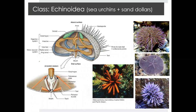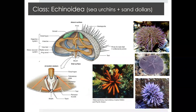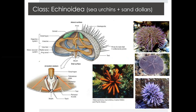The next class is Echinoidea, which are your sea urchins and sand dollars. It's not super important to know the internal structure of sea urchins, but one pretty cool thing is that they have a unique mouthpiece on the bottom called Aristotle's lantern. For your classic sea urchins, you have these balls of what look like pins or needles. And then you also have sand dollars, which are very flat organisms with a star shape in the center — both fall within the class Echinoidea.